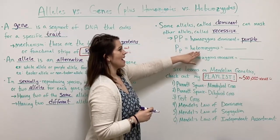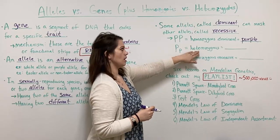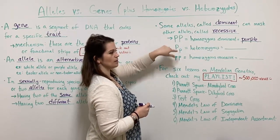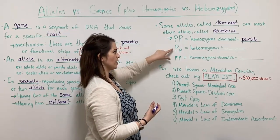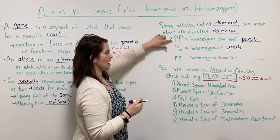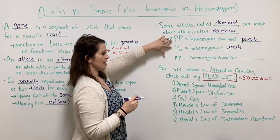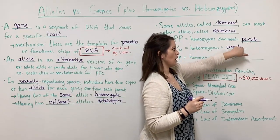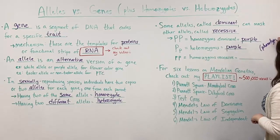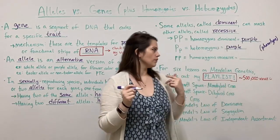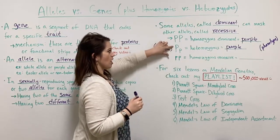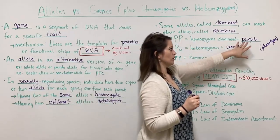If a pea plant is heterozygous at the flower color locus — meaning one dominant allele and one recessive allele — the dominant allele totally masks the recessive, and you only see the color from the dominant allele, which is purple. So two different genotypes give the same phenotype. The phenotype is what you observe, while the genotype is the specific combination of alleles that results in that phenotype.